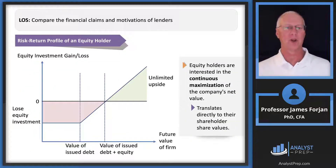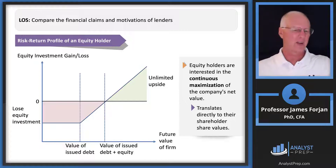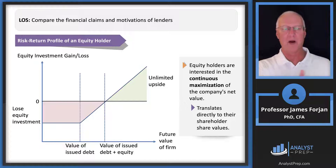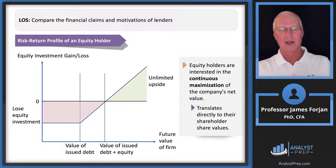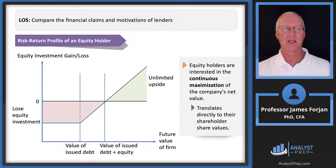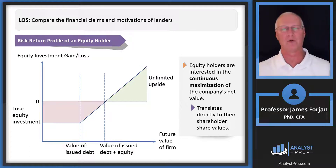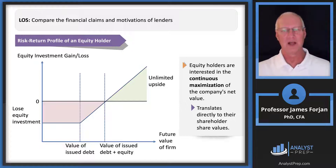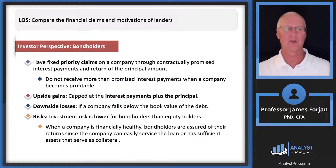Looking at the return profile picture for a shareholder: the vertical axis shows zero at the bottom and the amount of investment in a light pink color. As long as we generate enough money to pay off bondholders — reaching the debt-value break-even point on the horizontal future-value-of-firm axis — we then move into the far right area, shown in green: the unlimited upside potential. We only get to that unlimited upside after paying off bond holders. Equity holders are interested in the continuous maximization of the company's net value — net of what the bondholders receive.